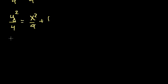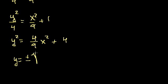Now I can multiply 4 times both sides and you get y squared is equal to 4 over 9 times x squared plus 4. Distribute the 4. Take the positive and negative square root of both sides. y is equal to the plus or minus square root of 4 over 9 x squared plus 4.